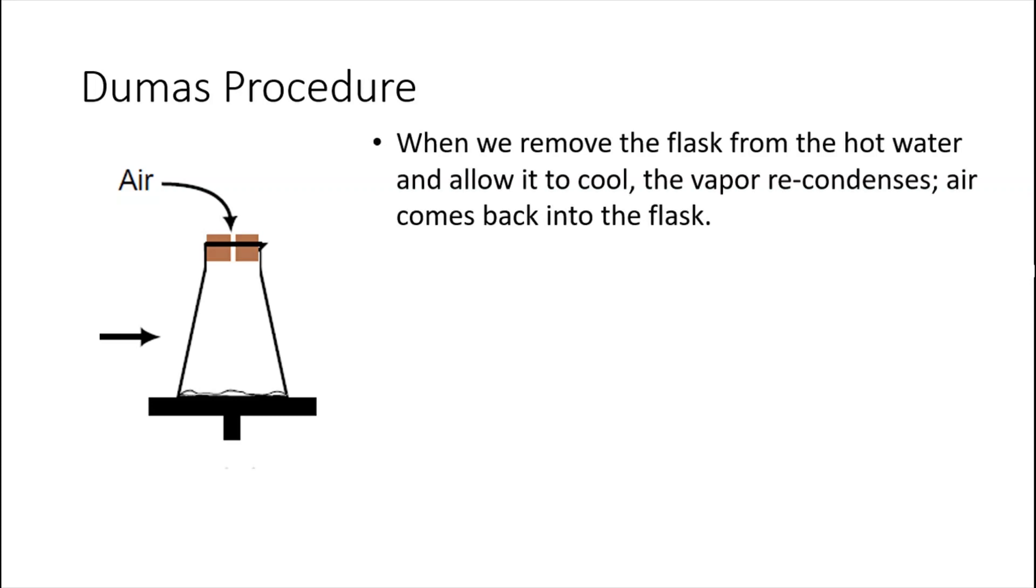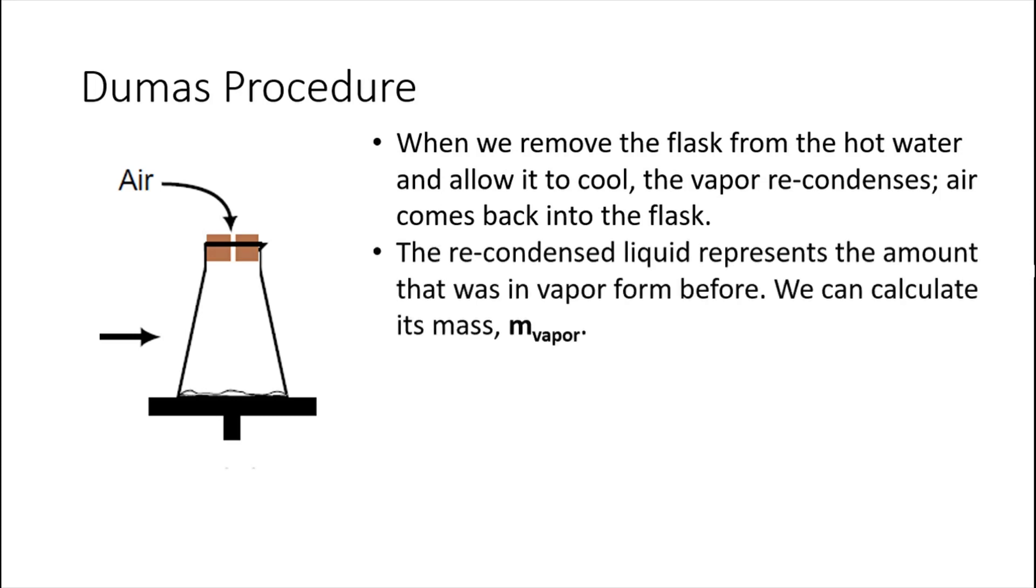After we have removed the flask from the hot water and allowed it to cool, the vapor will recondense. Air will push its way back into the flask. But what is important is that the recondensed liquid now represents the amount that was in vapor form before the recondensation. Because we know the initial mass of the empty flask, and now we know the mass of the flask plus this recondensed liquid, we can calculate what was the mass of the vapor.